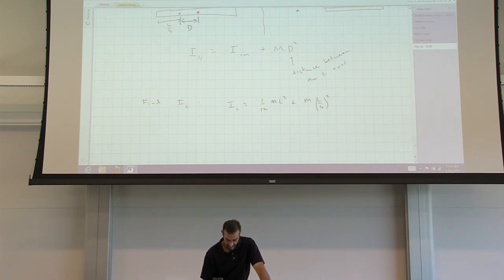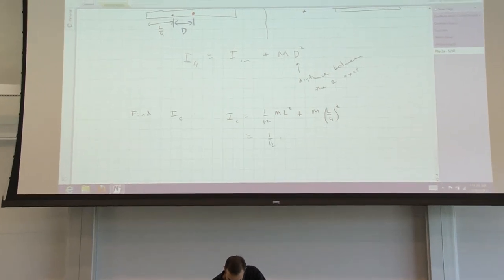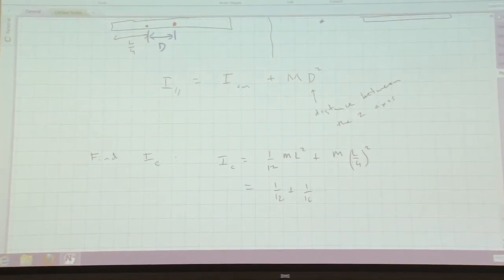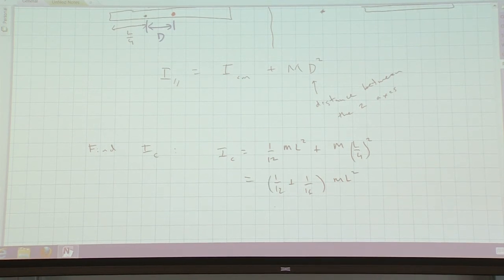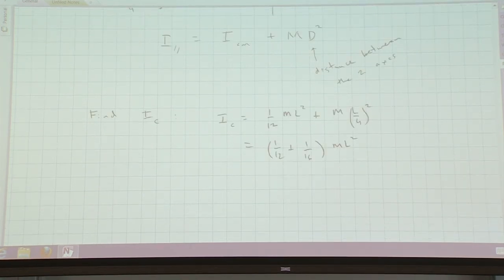Now we just have to add these together. It's 1/12 plus 1/16 mL squared, whatever that is. 48ths, what do we get? 7/48ths, is that it? I think that's right. Check my math later.